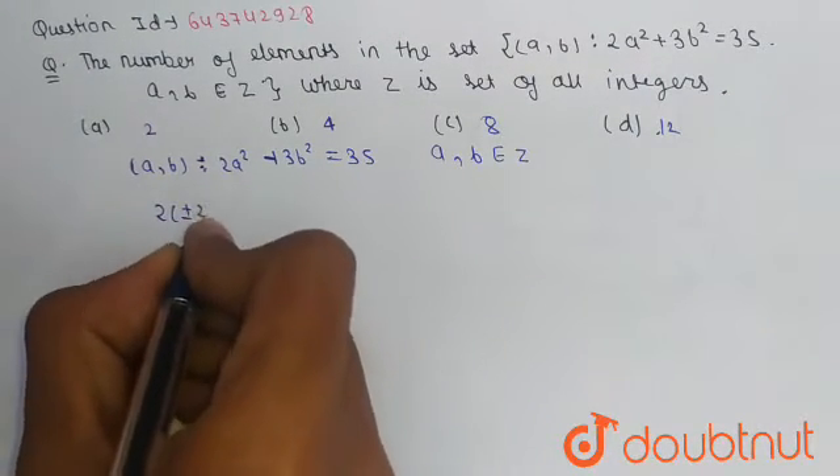2(±2)² + 3(±3)² = 35, and we also write 2(±4)² + 3(±1)² = 35.